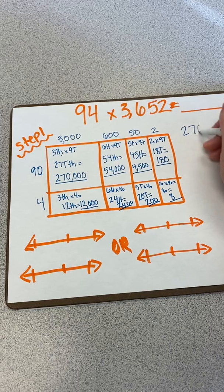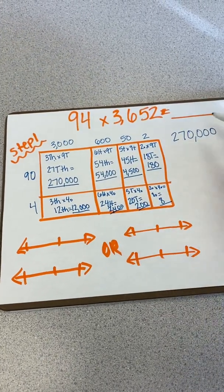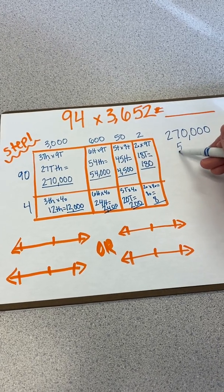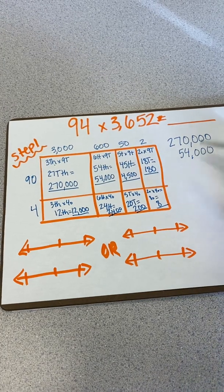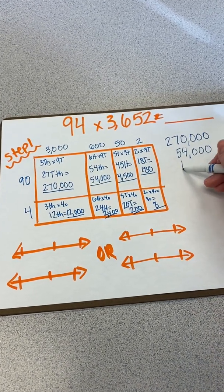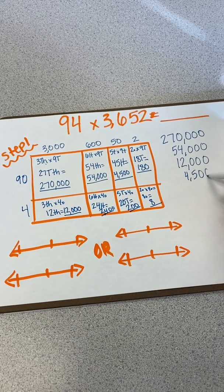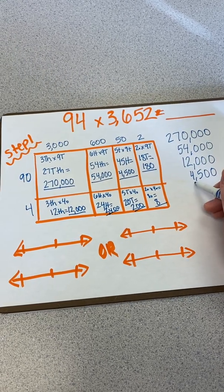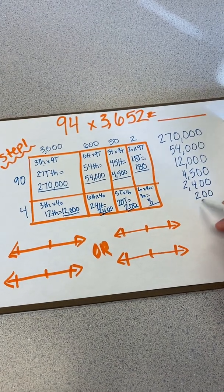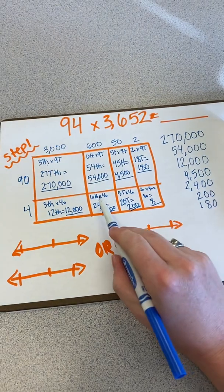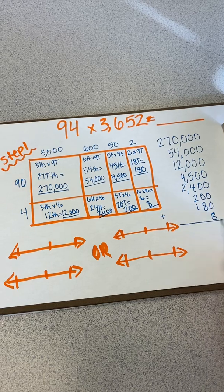So now I can go through and add up all of these products in order to find the total product for this number. It's very important that you line up all of your place values. So using lined paper and turning it sideways might be one way to keep your organization and making sure that you're not writing so small that you can't read what you're writing. A lot of times our mistakes come from copying from our area model to adding. So make sure you give yourself plenty of room and take your time.